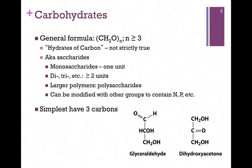The general formula for a carbohydrate is to have three or more copies of the general formula CH₂O. In fact, that's where the name comes from — hydrates of carbon. Although it isn't strictly true, we don't have a string of carbon atoms to which we've attached water. Instead, we have a carbon atom bound to both a hydrogen and an OH group. They're also called saccharides, and one way we can classify them is by how many units are present in the molecule.